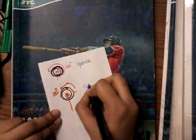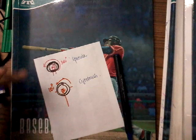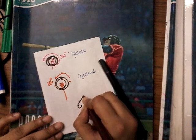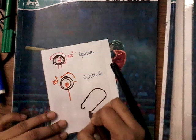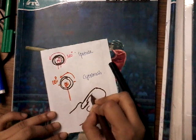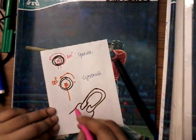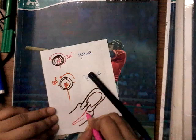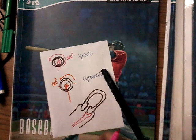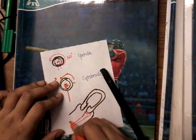Let me show where the spatula and cyto brush exactly work when introduced into the cervix. If this is the uterus, this is the cervix, and this is the vagina — once the spatula is introduced into the cervix, it sits at the ectocervix. When you rotate it, only the squamocolumnar cells of the ectocervix are picked up.